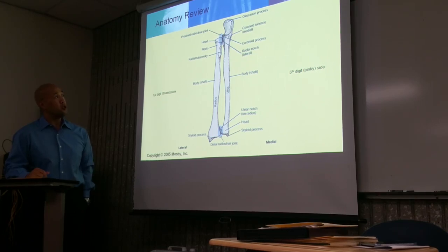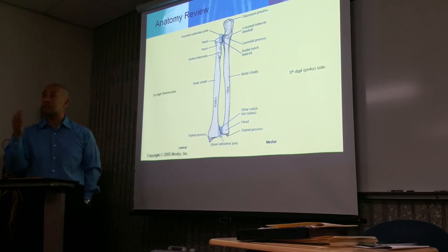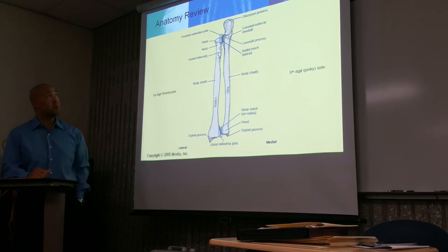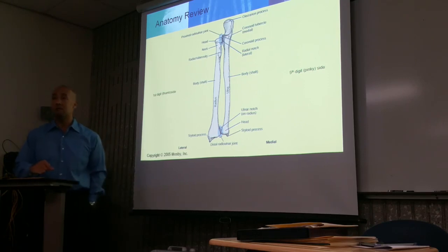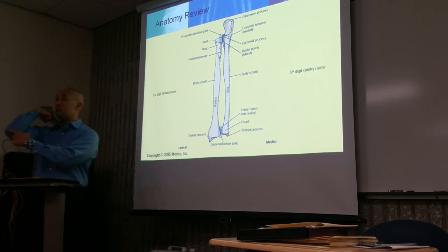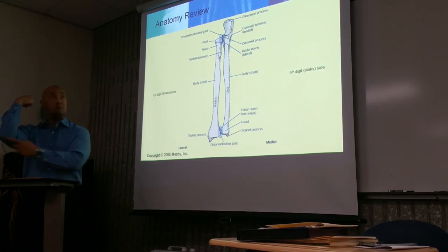Then we have a coronoid tubercle. Tuberosities and tubercles are rough surfaces for ligament and tendon attachments. The very proximal part of the ulna is the olecranon process, which helps form the elbow joint. The olecranon process is that bony part of your elbow that you can feel right here — that bony projection you feel is part of the ulna.